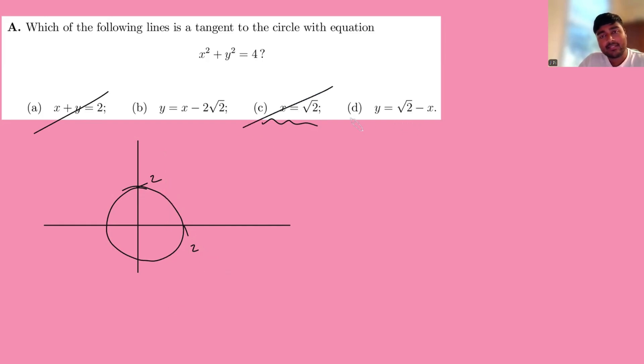What about this guy here? This is just y equals root 2 minus x. Or in other words, x plus y is root 2. So again, it's going to be parallel to this guy, but this time passing through root 2 and root 2. And so it's going to look like that. So clearly not a tangent. So the answer is b.